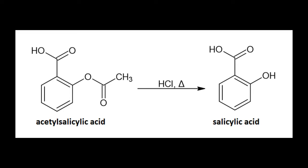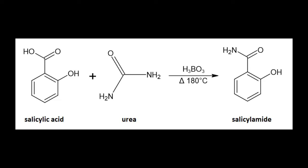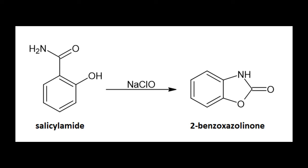There are three component parts of the synthesis. The extraction and hydrolysis of acetylsalicylic acid using dilute hydrochloric acid. Obtaining salicylamide with urea and obtaining salicylic acid. And finally, the synthesis of 2-benzoxazolinone is achieved through the Hofmann transposition of salicylamide with sodium hypochlorite.